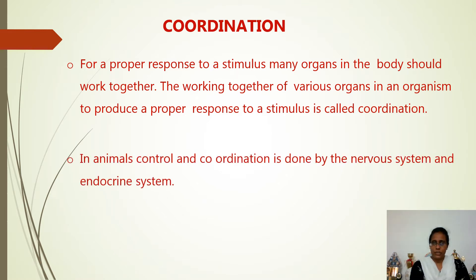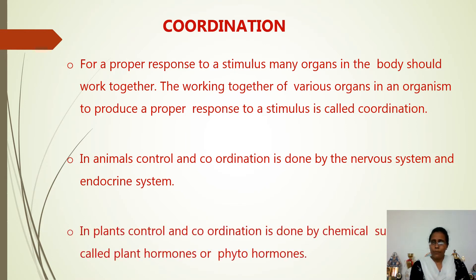In animals, control and coordination is done by the nervous system and the endocrine system, which we will discuss later. In plants, control and coordination is done by chemical substances called plant hormones or phytohormones, which will also be discussed later.